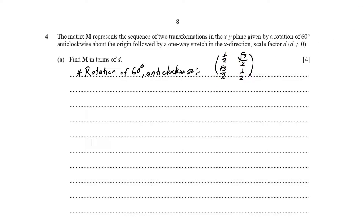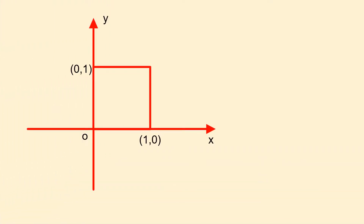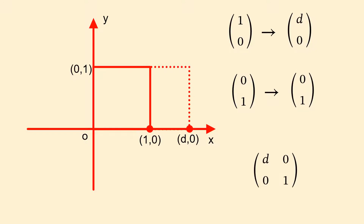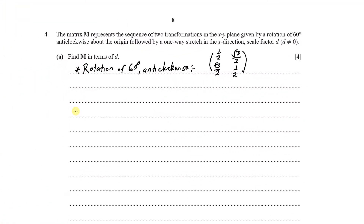Now let us consider the one-way stretch in the x-direction. The unit square is being stretched parallel to the x-axis with scale factor d. The point (1, 0) is transformed onto (d, 0), and the point (0, 1) remains invariant, mapped onto itself. So the operator matrix for the one-way stretch with factor d is: top row (d, 0), bottom row (0, 1).